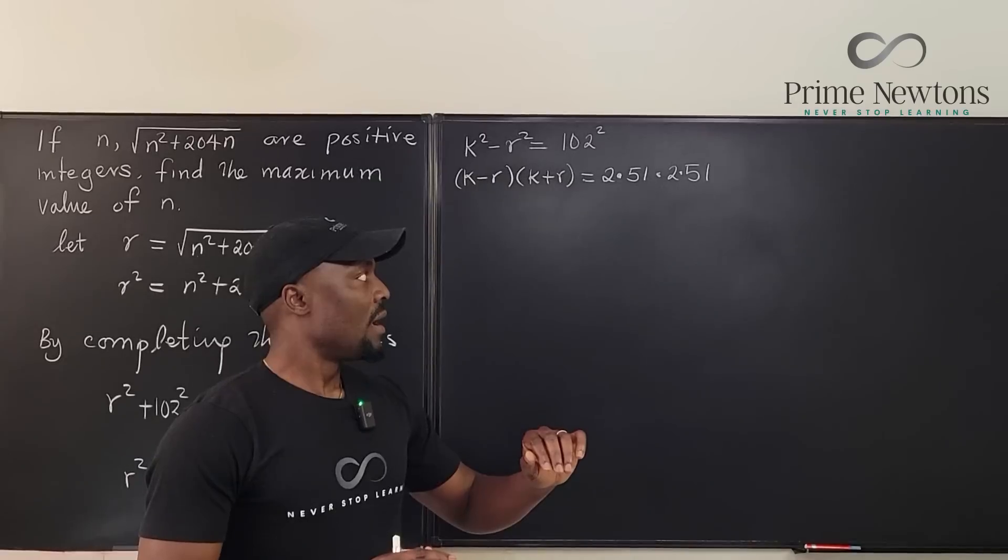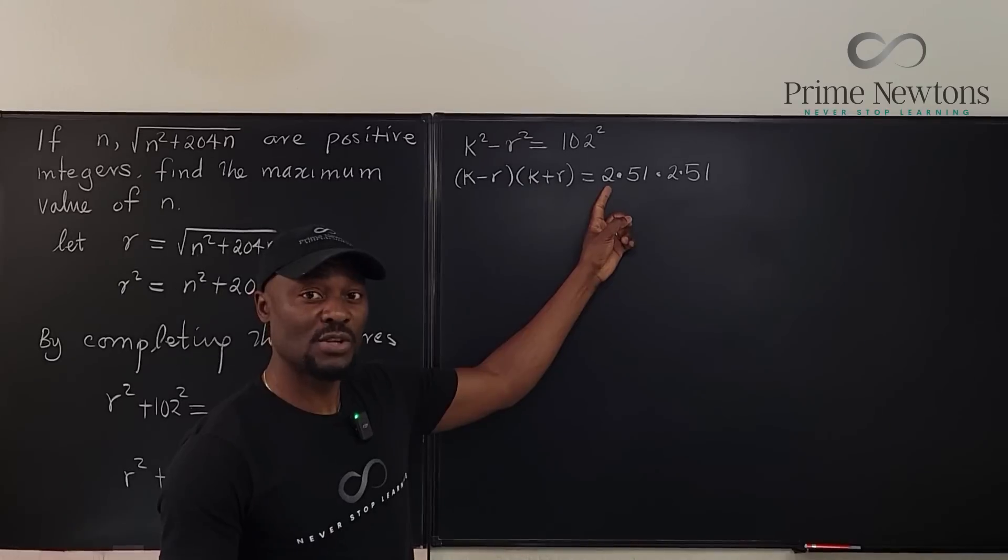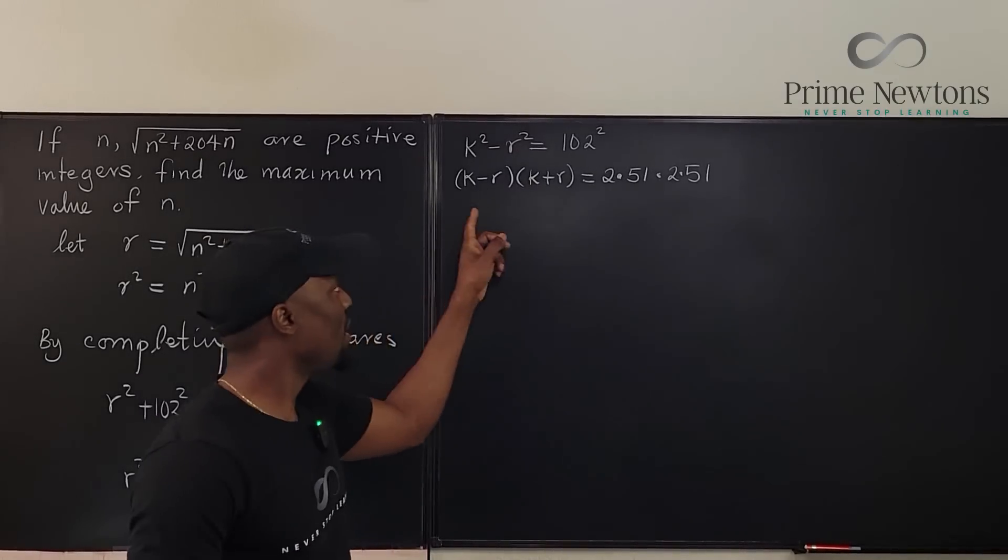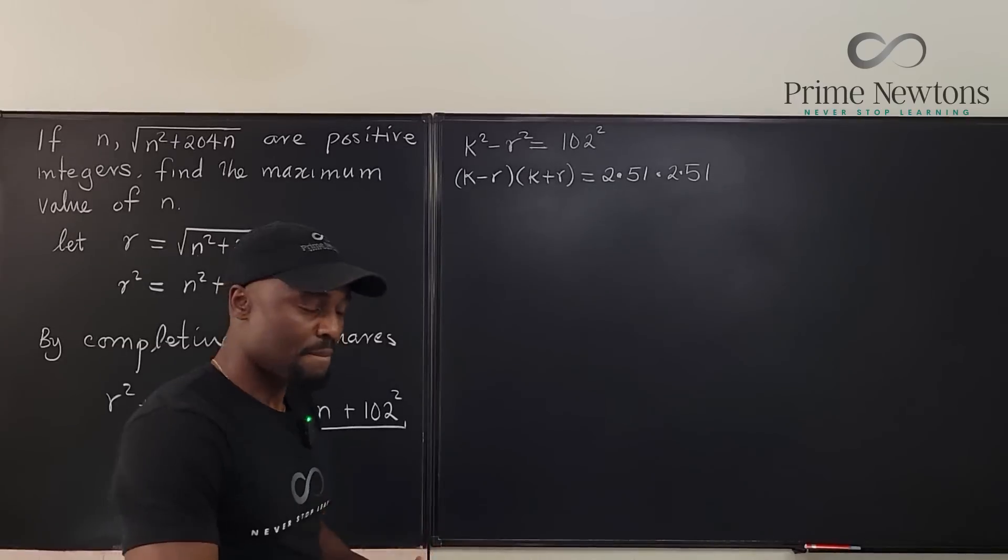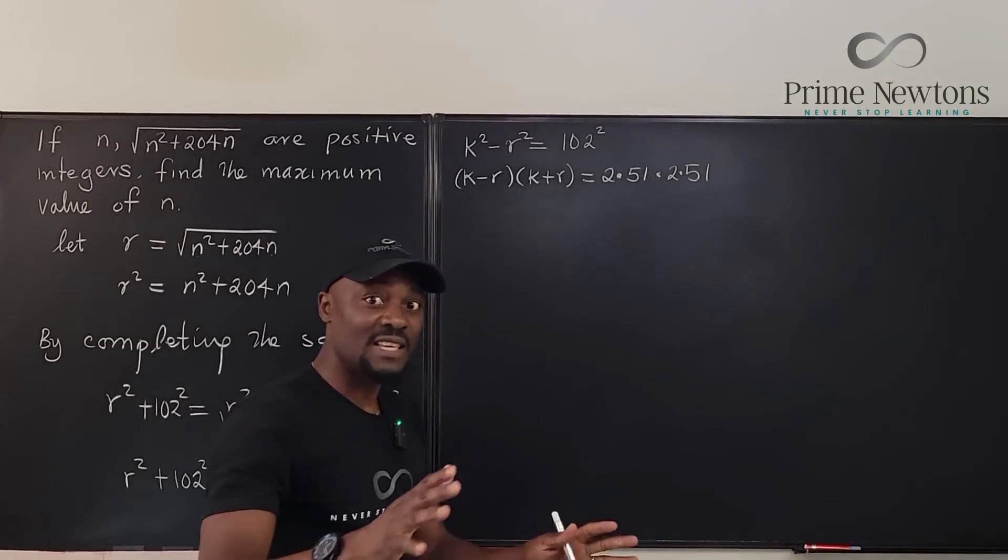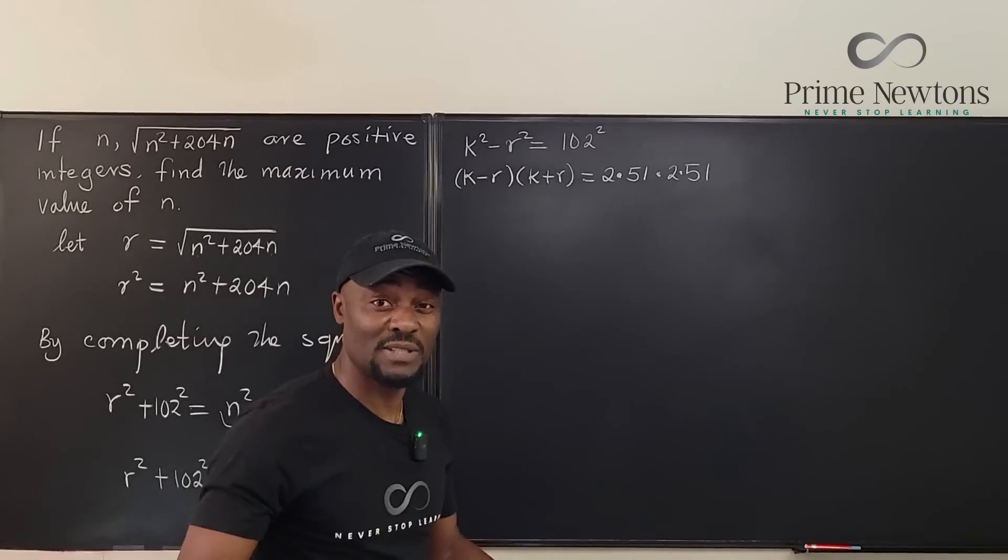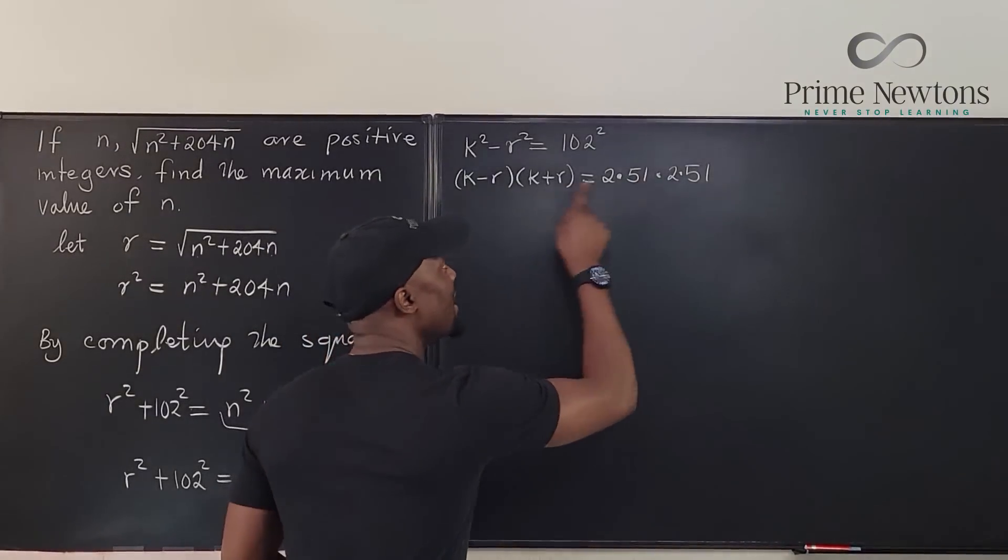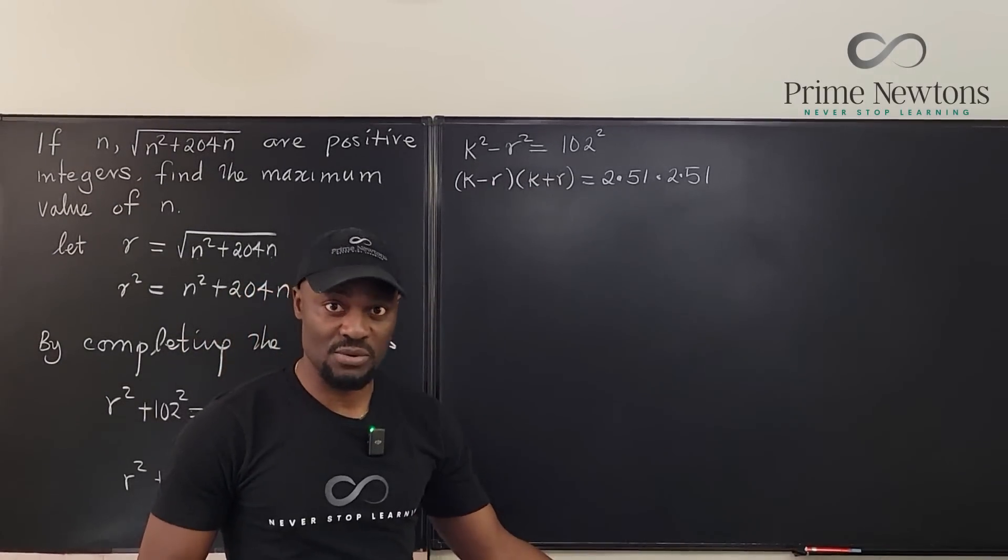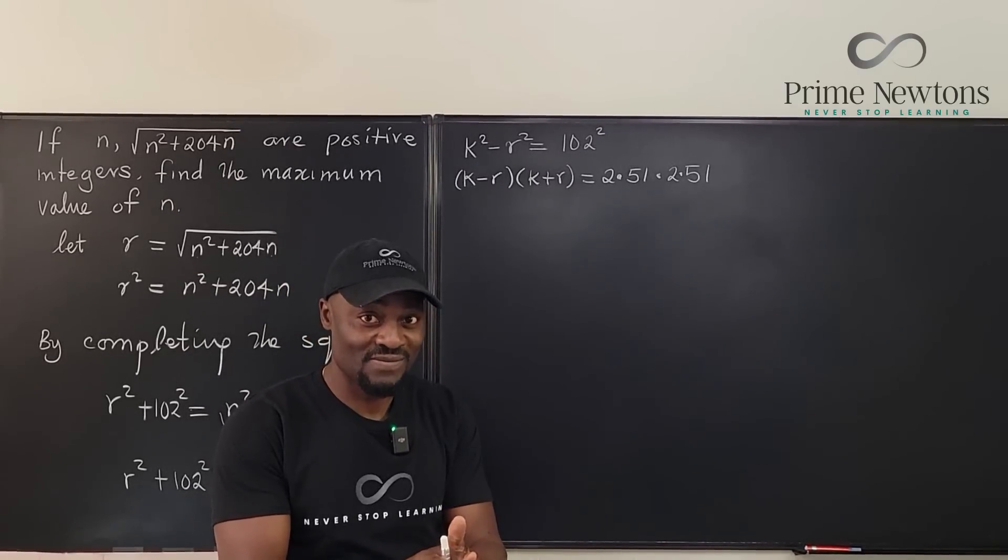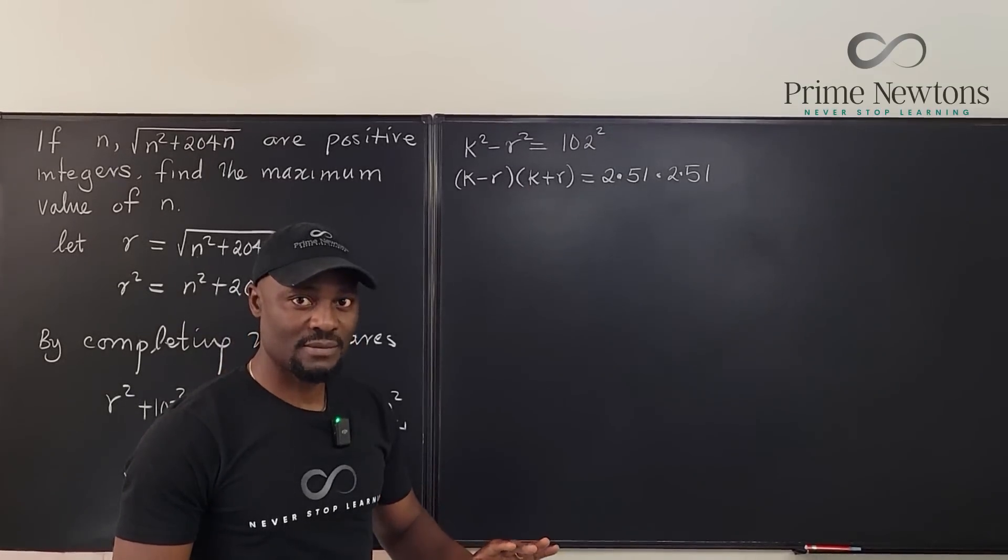When you're trying to factor, because of this two, it's harder. You're going to get so many options. Let's minimize the options we have on the right hand side. Let's talk about the evenness or the oddness of the numbers. Watch this, because the right hand side is even, the left hand side must be even. It saves you a lot of time. If the left hand side is even, it means at least one of these two is an even number. And if you understand how addition and subtraction works, both of them must be even.